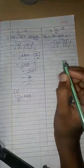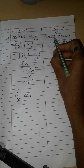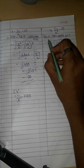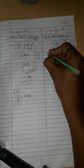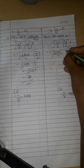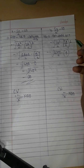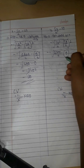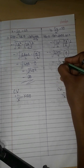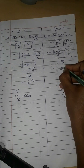So sigma answer is 20. For Papu: sigma d² is 2800, n equals 7, sigma d equals 0. Substituting: 2800 divided by 7 minus 0 gives 400. Root of 400 minus 0 equals 20. So sigma for Papu is also 20.